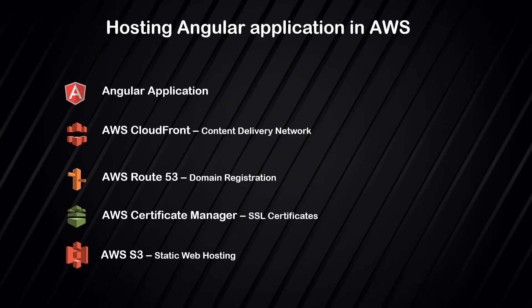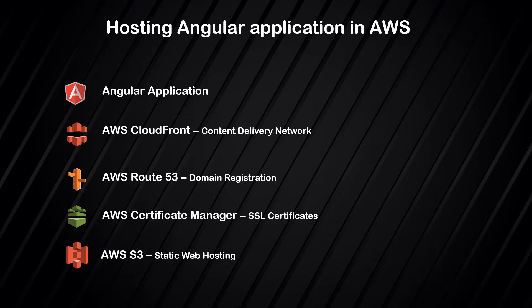Today we are going to see how to host an Angular application in AWS. First we need an Angular application, then we are going to use CloudFront for content delivery, register the domain using AWS Route 53, secure the site using Certificate Manager by generating the SSL certificate, and finally host the application using AWS S3 bucket. These are all the components we are going to use to host a static website in AWS.